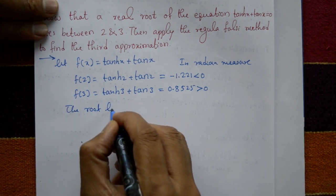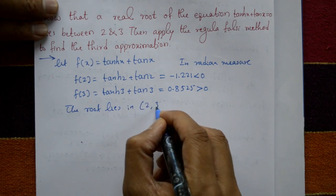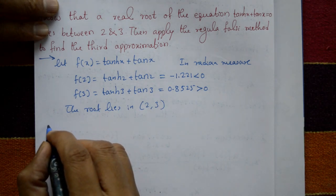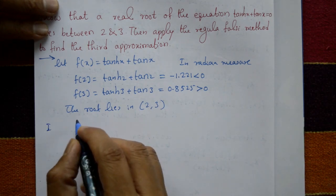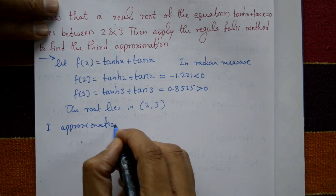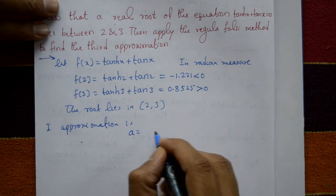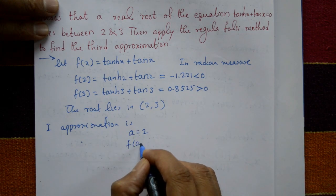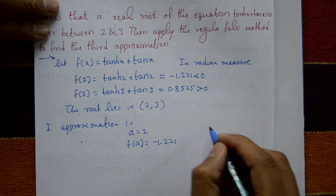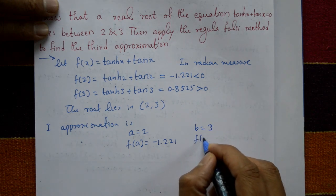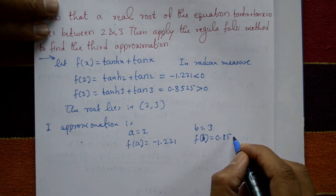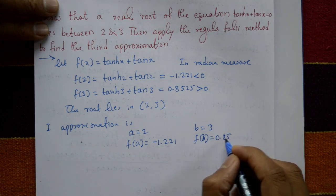Since f(2) < 0 and f(3) > 0, the root lies between 2 and 3 as given. For the first approximation: a = 2, f(a) = -1.221, b = 3, and f(b) = 0.8525.